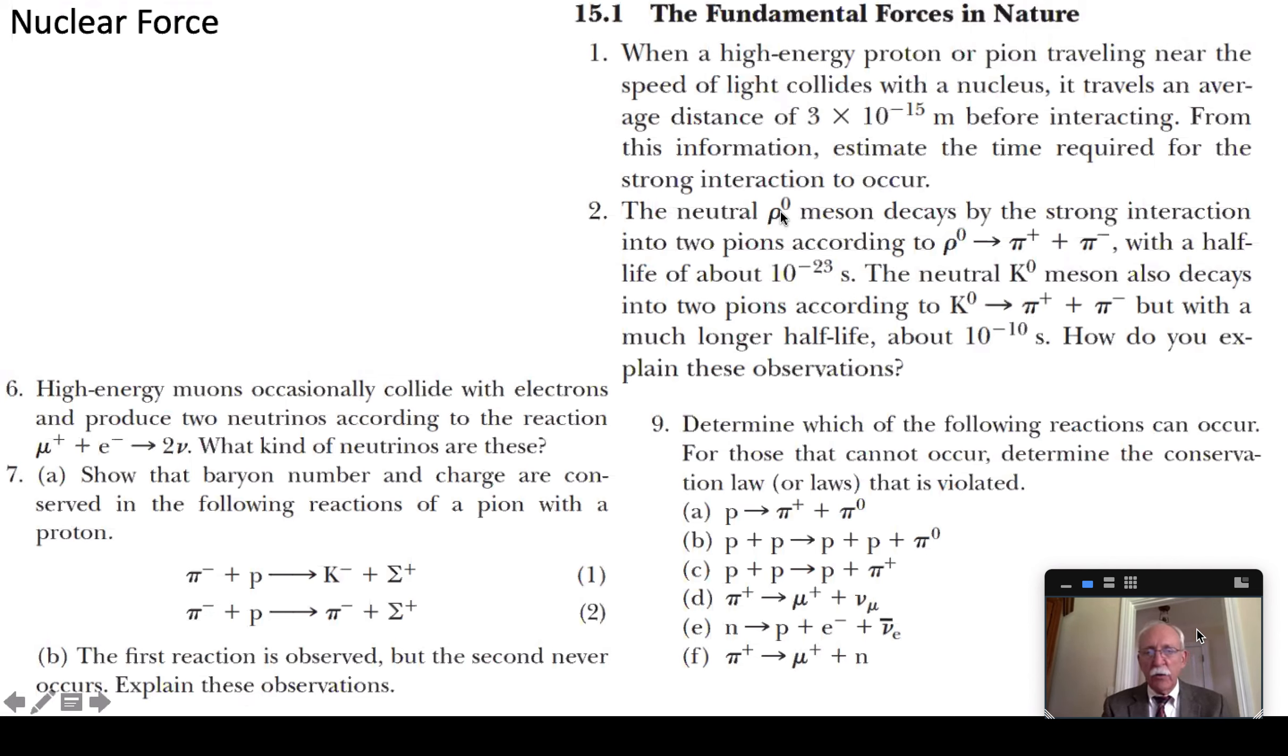Okay so a neutral rho-zero meson decays into pi-plus and a pi-minus. And the half-life is about ten to the minus twenty-three seconds and that's a strong interaction. A neutral k meson will also decay into a pi-plus and a pi-minus. But at ten to the minus ten seconds what's the difference?